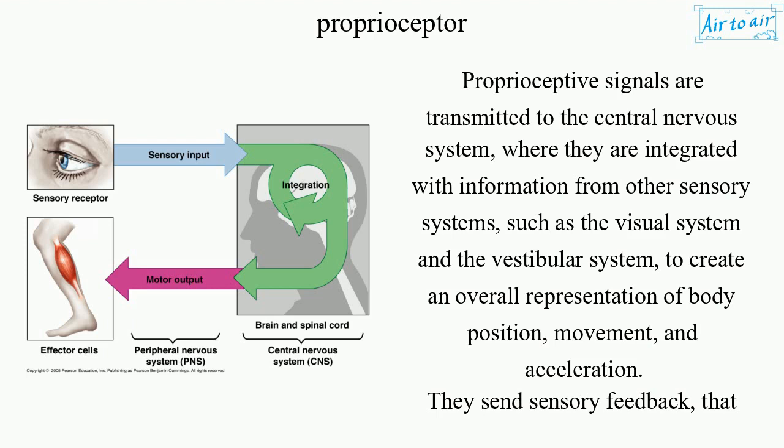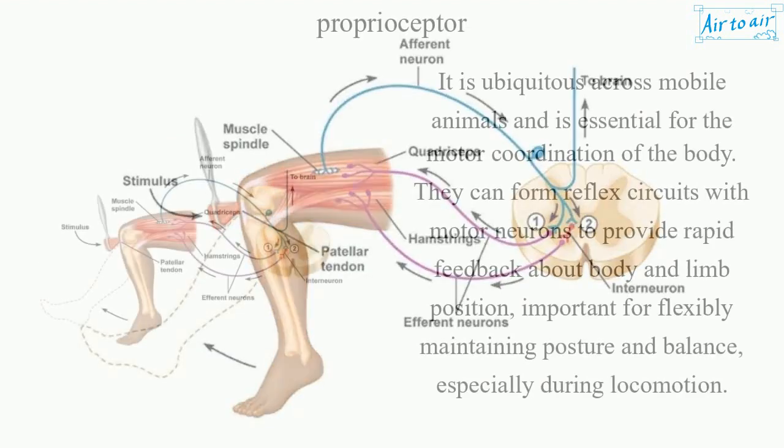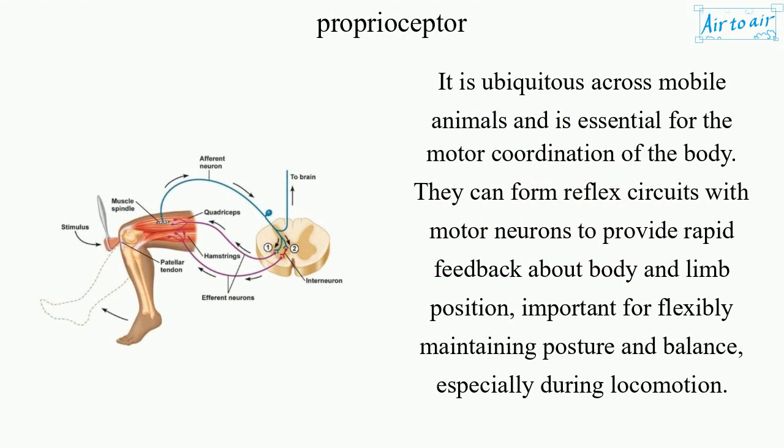They send sensory feedback that helps stabilize body posture and coordinates body movement. It is ubiquitous across mobile animals and is essential for the motor coordination of the body. They can form reflex circuits with motor neurons to provide rapid feedback about body and limb position, important for flexibly maintaining posture and balance, especially during locomotion.